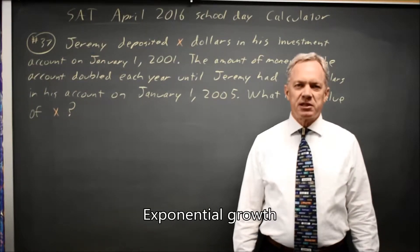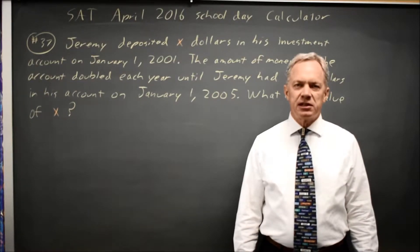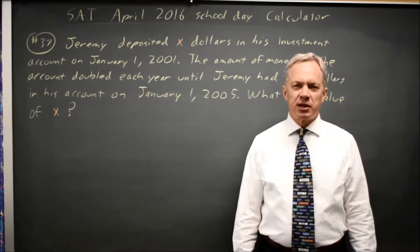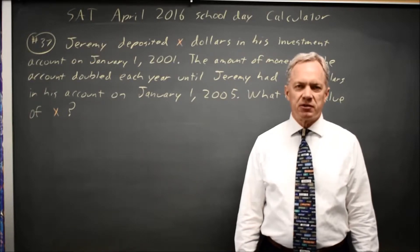This is Calculator Question Number 37 from SAT Practice Test 6 in the 2018 College Board Prep Book. It's also April 2016 SAT. The College Board gives us a word problem about the growth of an investment that doubles every year.